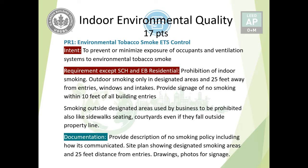Prerequisite number one is Environmental Tobacco Smoke (ETS) control — straightforward, to minimize the exposure of ETS to building occupants and the systems installed for ventilation so that they don't pull contaminated or ETS air inside the building. The requirements are similar to all adaptations except for schools, which is more stringent. For existing building residential, it might be a little lenient based on the codes. For all other adaptations, indoor smoking is completely prohibited and outdoor is only allowed in designated areas.